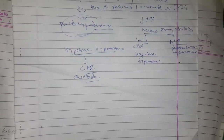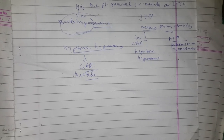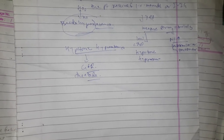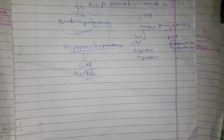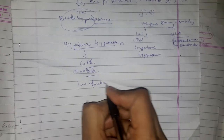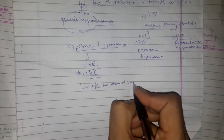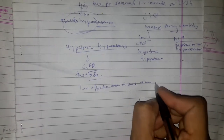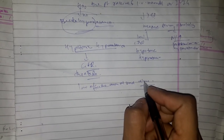If no thiazide diuretic use, check whether there is edema — such as ascites. If edema is present, it is due to low effective arterial blood volume, which may be caused by heart failure or cirrhosis.